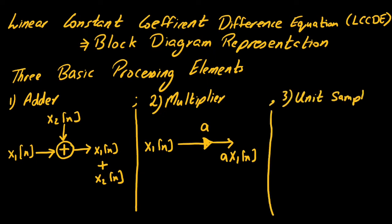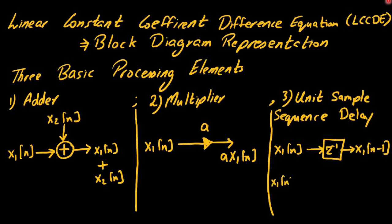Lastly, we have a unit sample sequence delay. This is represented by z to the power minus 1 which yields a unit delay. To get a delay of say m samples, we replace z to the power minus 1 with z to the power minus m. And this now gives x n minus m and it requires m storage elements.